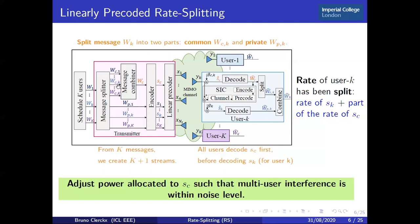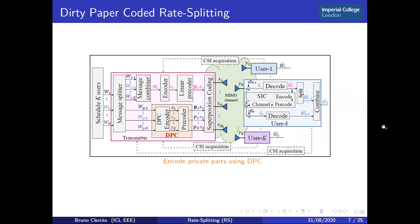The key is to adjust the power allocated to the common stream SC such that any multi-user interference among the private streams is within the noise level. Another architecture is dirty paper coded rate splitting, which is similar to the previous one except that the private parts are encoded into private streams using dirty paper coding instead of linear precoding. The remaining steps are the same.